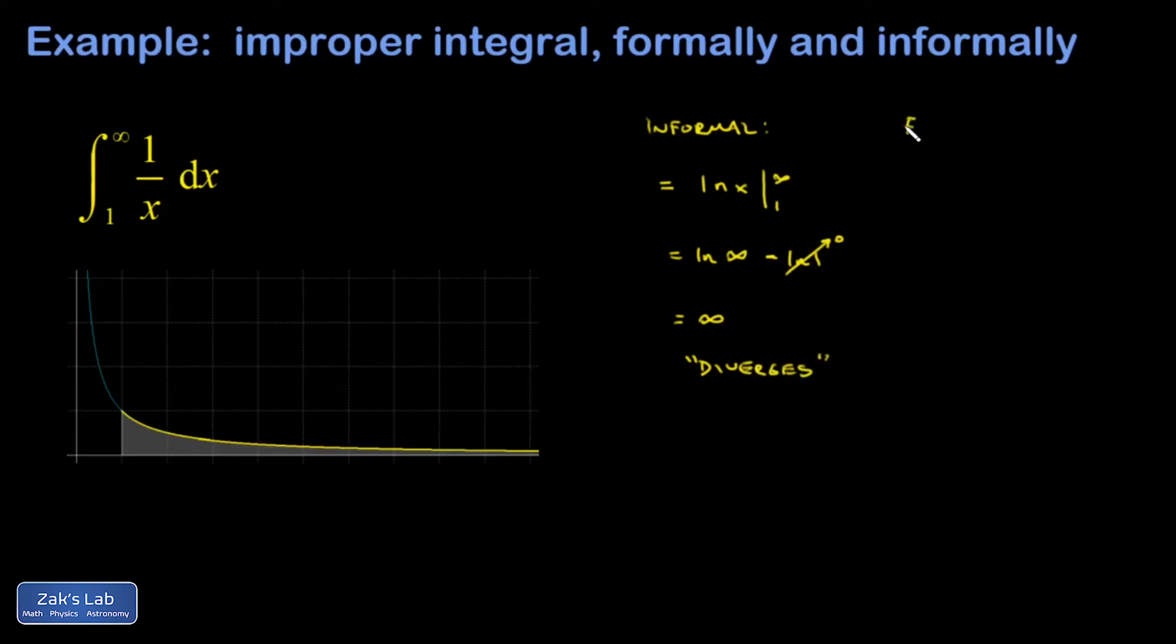What about the formal method? In the formal method, we can't just throw infinities around like they're a number, and so we have to express it as a limit.